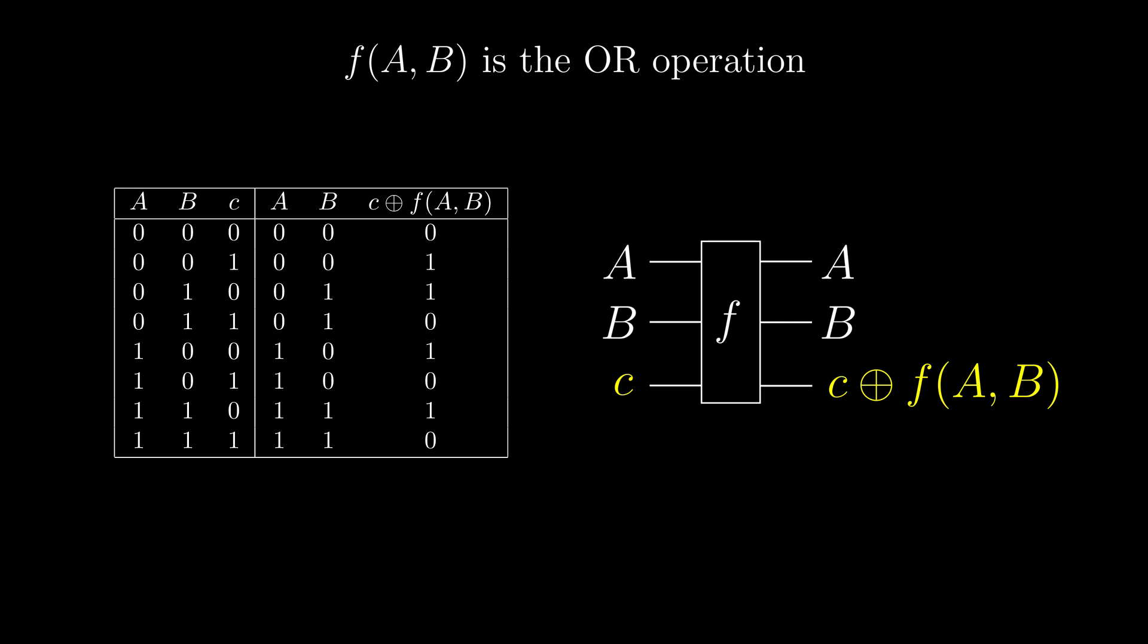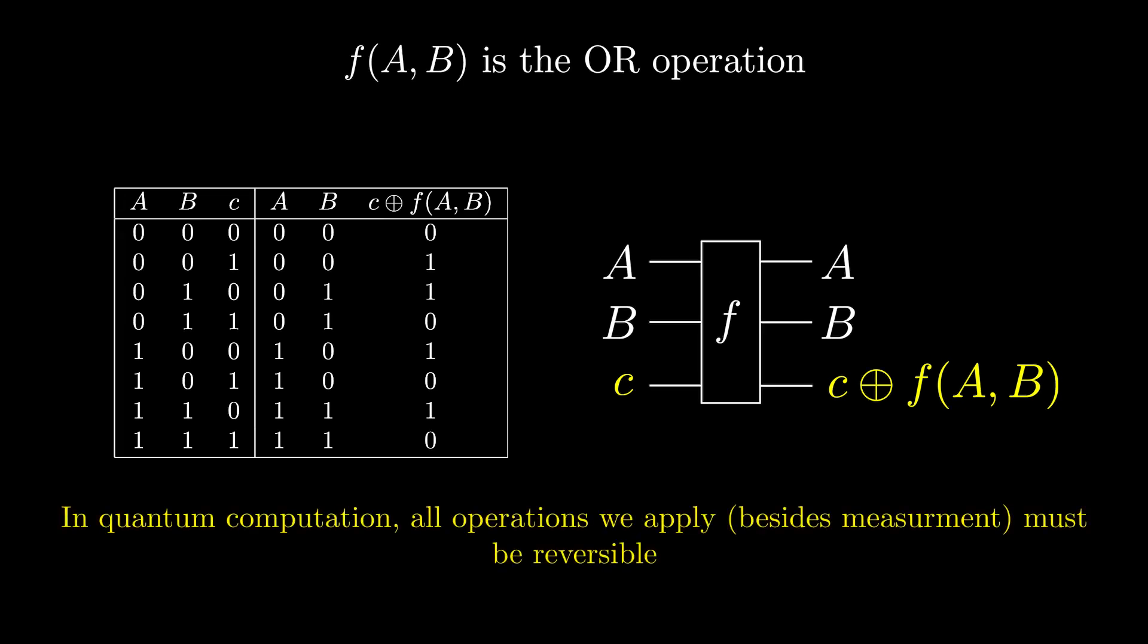What is the point in all this? Well, with quantum computers, all operations besides measuring the qubits must be reversible. This is because every operation must be unitary.